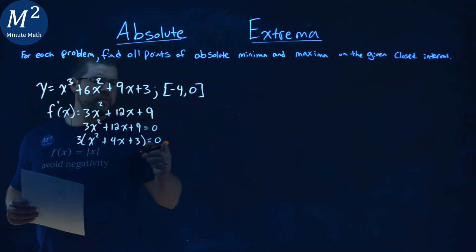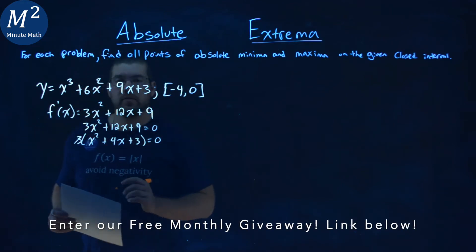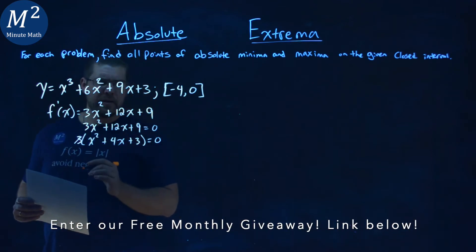We divide both sides by that 3 here, and that cancels it. So we've got x squared plus 4x plus 3 equals 0, and that can factor.